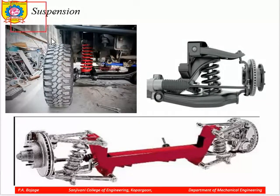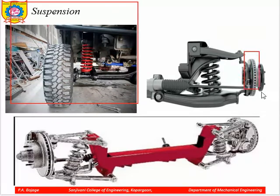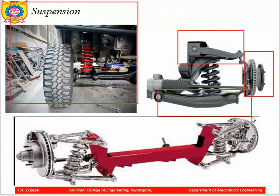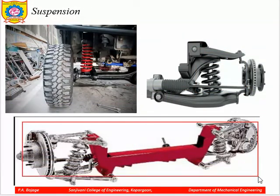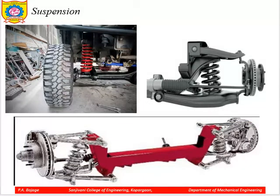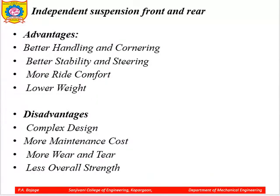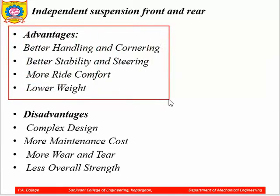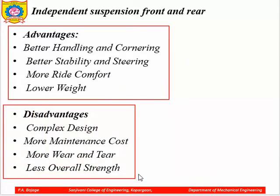These are diagrams of actual suspensions used in automobiles. You can see wheels attached with disc brakes, the upper control arm, lower control arm, coil spring with damper, and bushings. This is the complete view of the front axle. Advantages of the independent suspension system: better handling and cornering, better stability for steering, more ride comfort, and lower weight. Disadvantages: slightly complex in design, more maintenance cost, more wear and tear, and less overall strength.